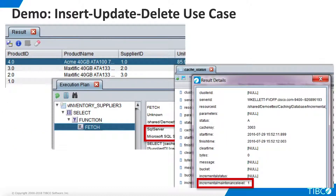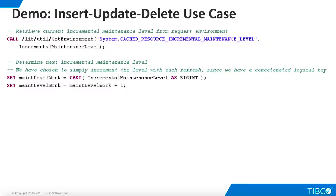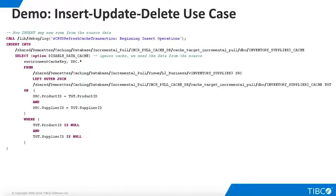When you refresh the cache, the initialize script runs and the cache status changes to Up. As expected, the view now returns data from the cache and the cache status table shows an incremental maintenance level of one. Now let's examine the refresh script — again, we'll focus on the parts that differ from what we have seen. We have decided to deal with the incremental refresh level by simply incrementing it.